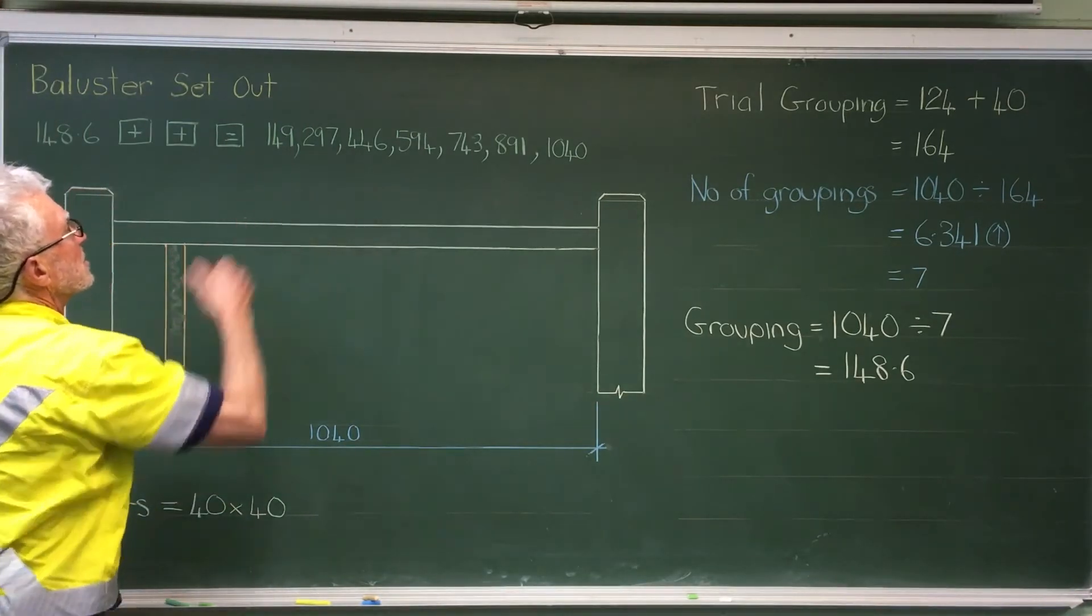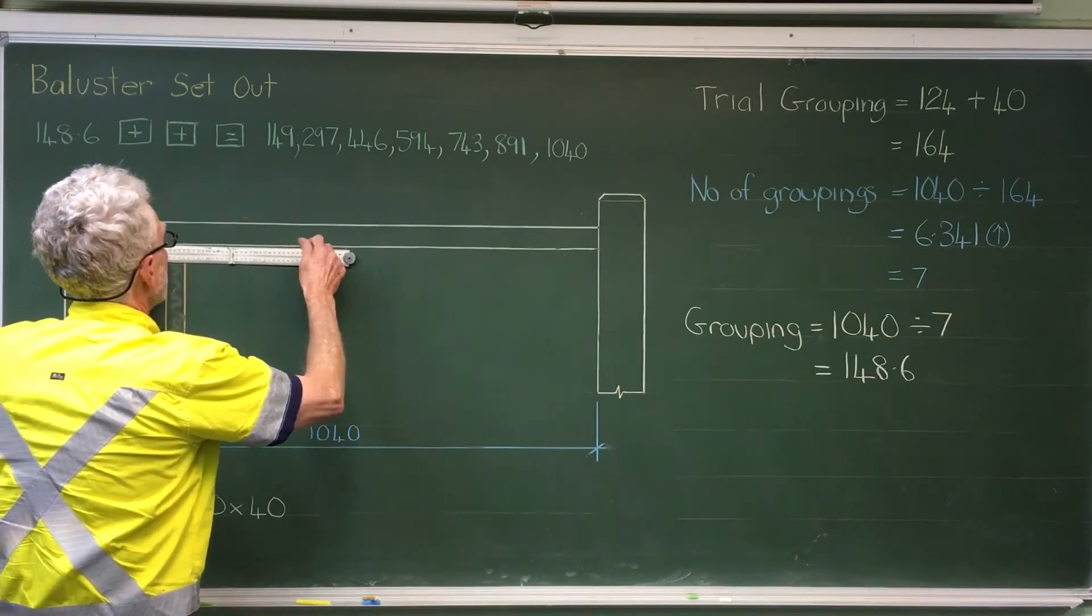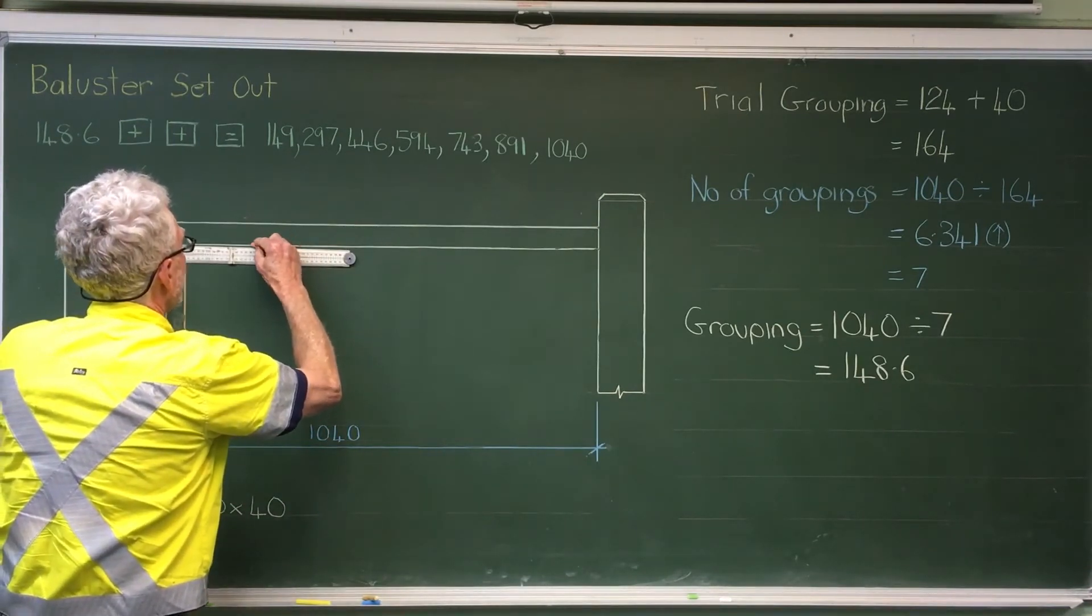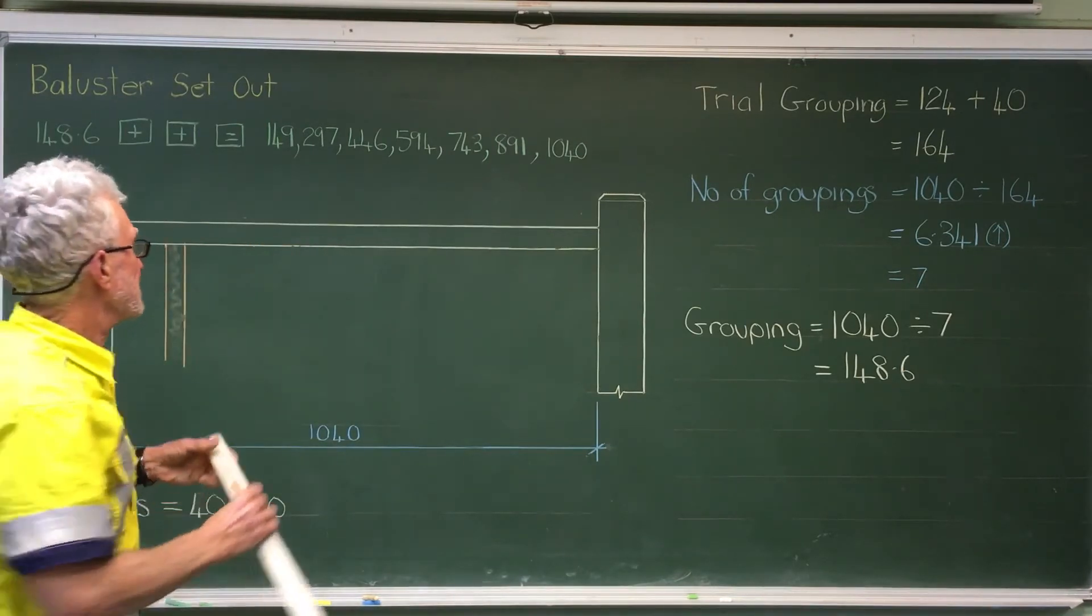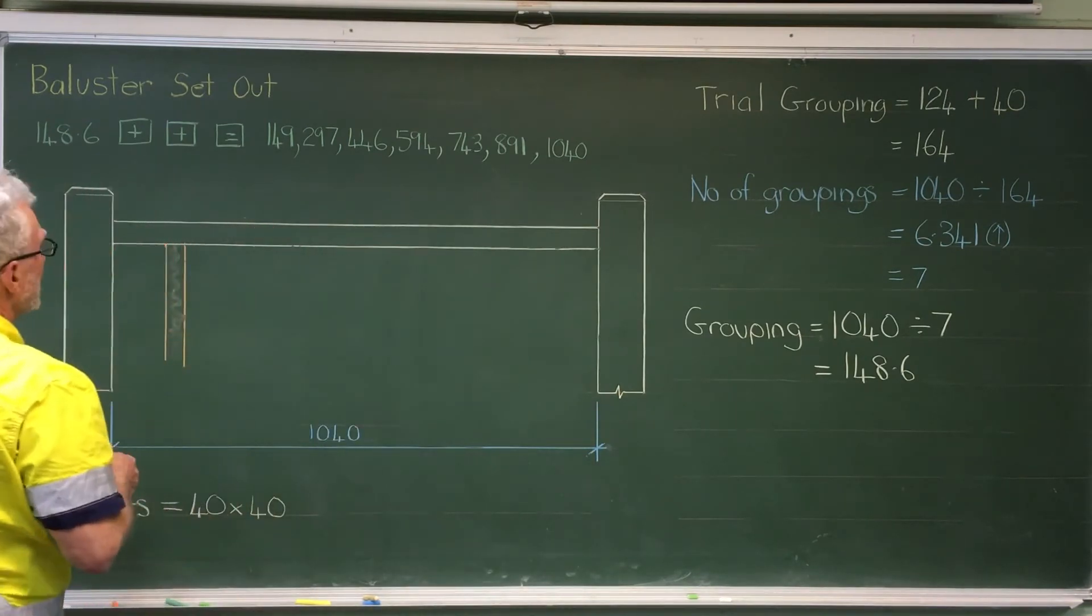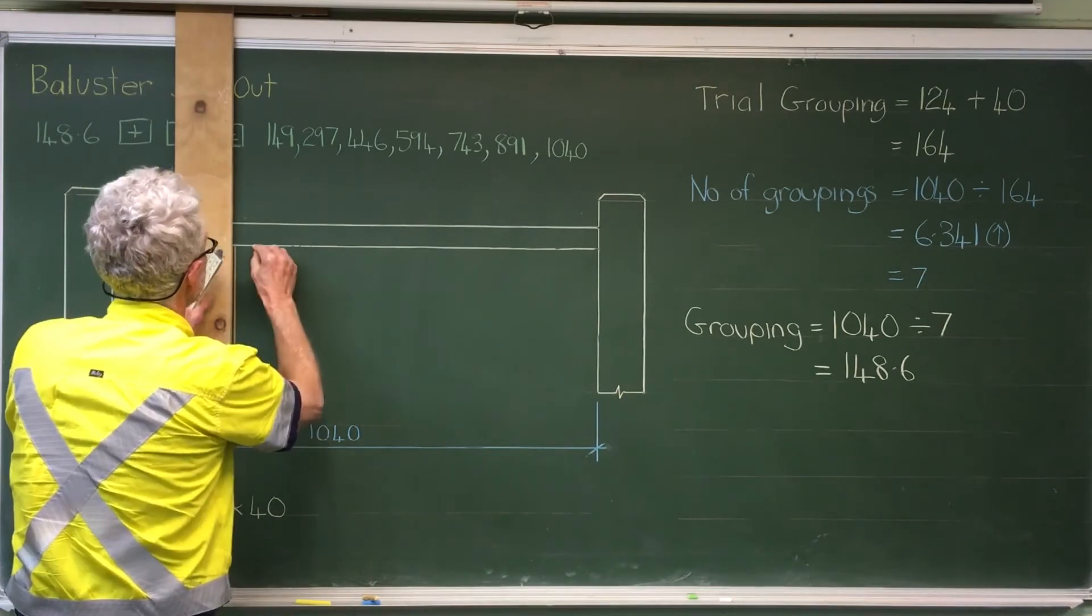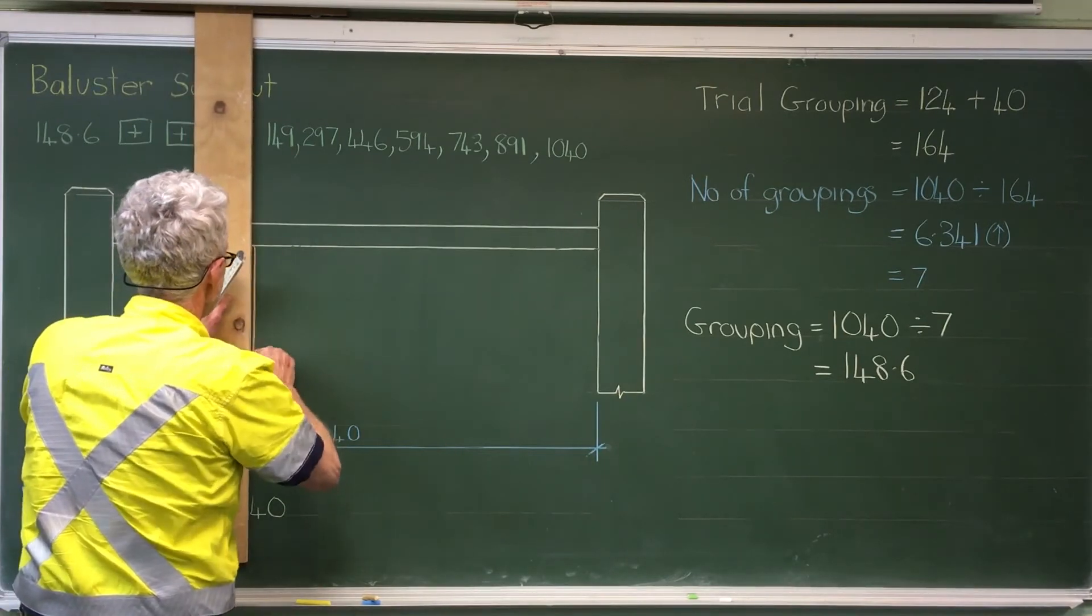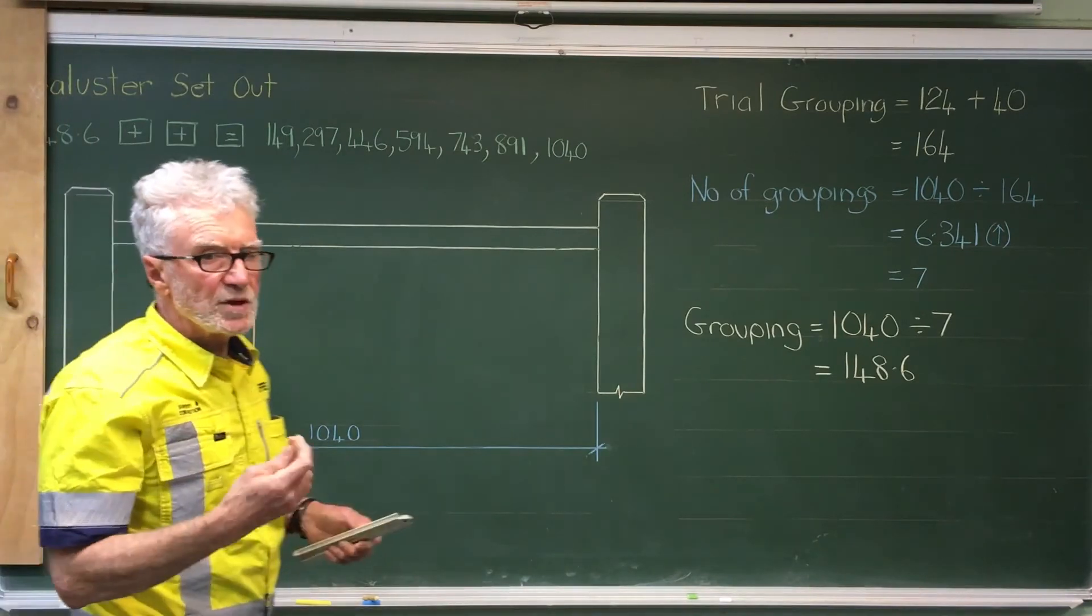Next one, 297. Again, that position includes the baluster. So I'd come back 40mm. I'll keep going.